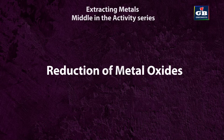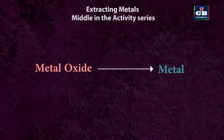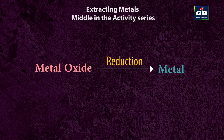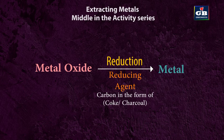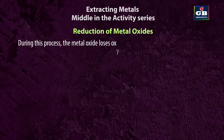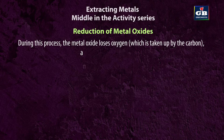Reduction of metal oxides. Once metal oxides are obtained through roasting or calcination, the next step is to reduce these oxides to obtain the pure metal. This reduction is typically carried out using a reducing agent such as carbon in the form of coke or charcoal, which removes the oxygen from the metal oxide. During this process, the metal oxide loses oxygen, which is taken up by the carbon, and the metal is left behind.